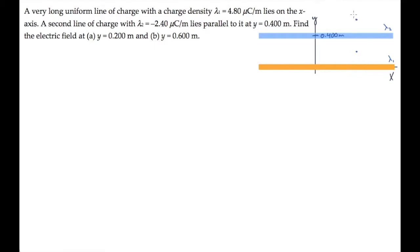We know from Coulomb's Law that the electric field from a line of charge is 1 over 2 pi epsilon naught lambda, the charge per unit length, divided by r. And that field is directed radially away from the line charge if lambda is positive, and towards the line charge if lambda is negative.